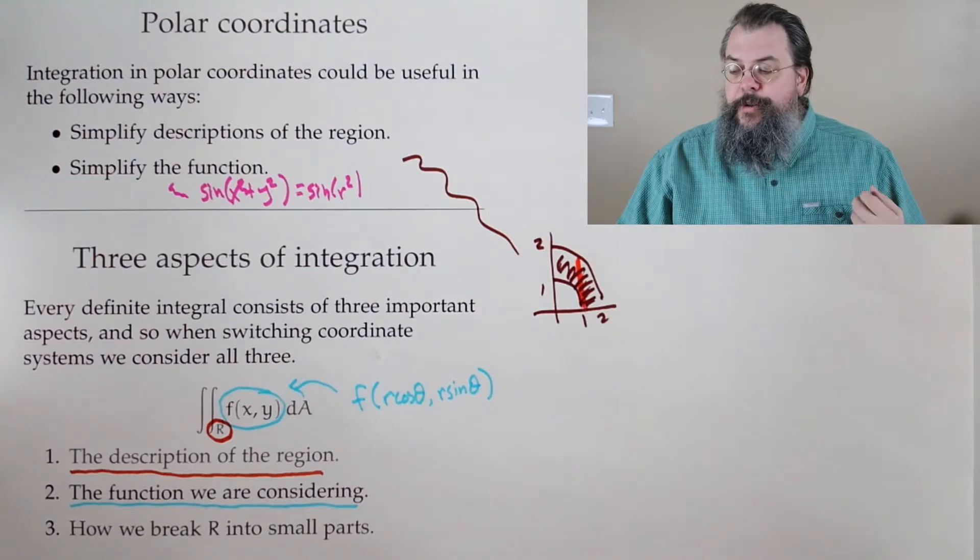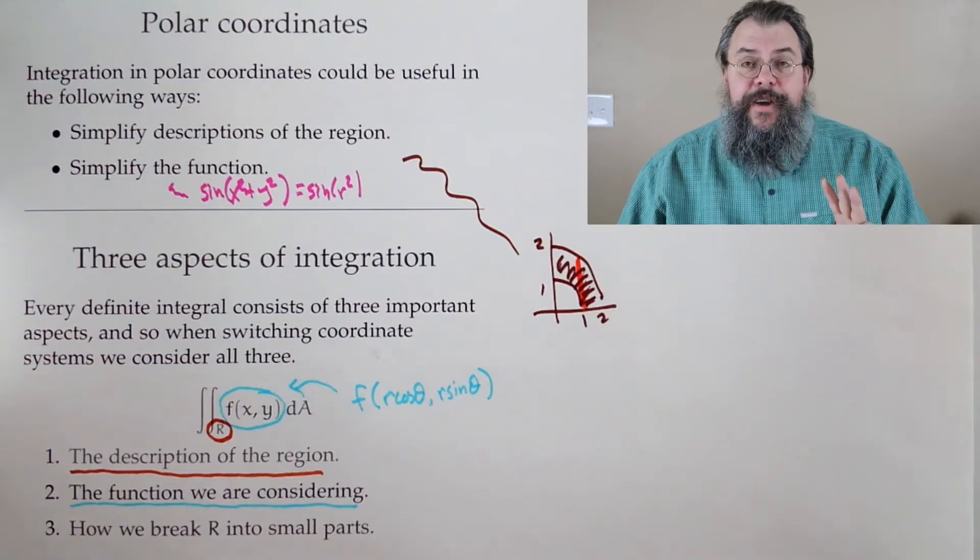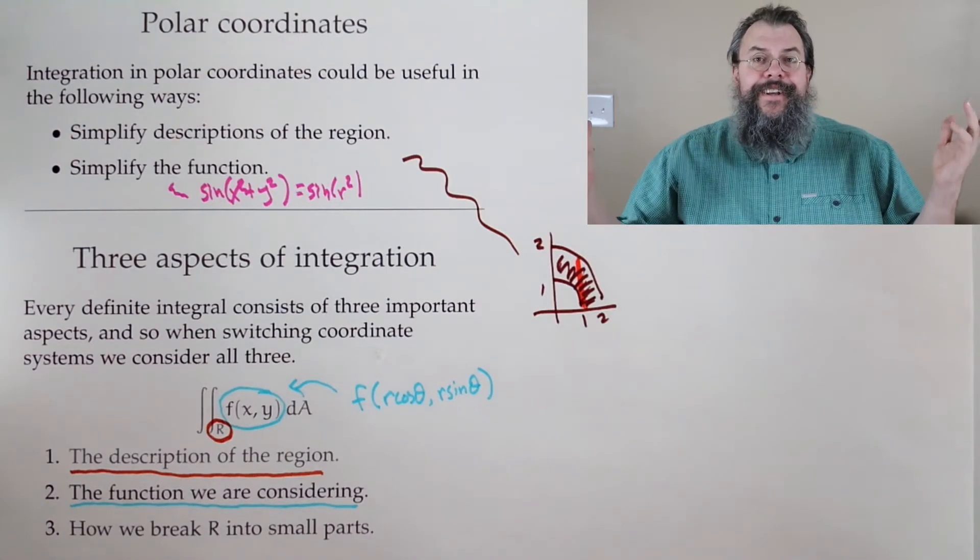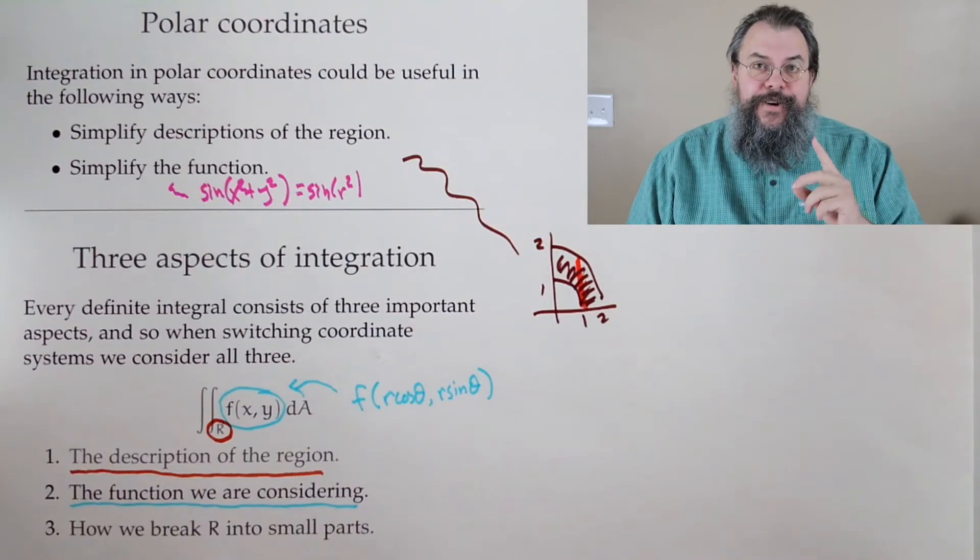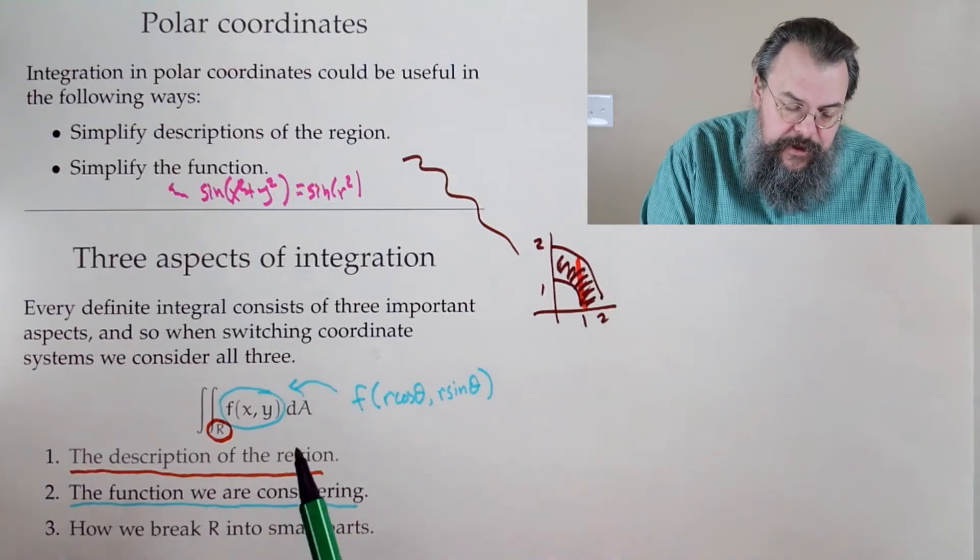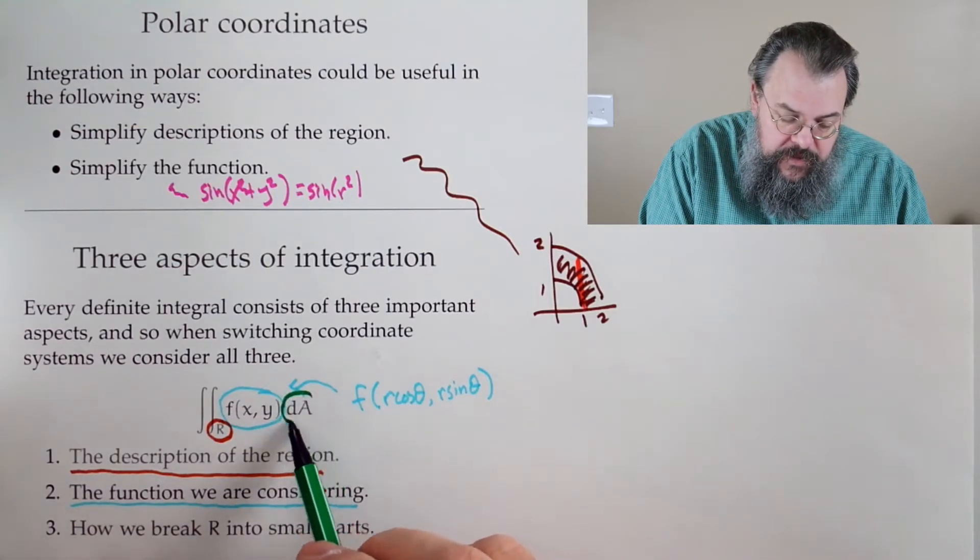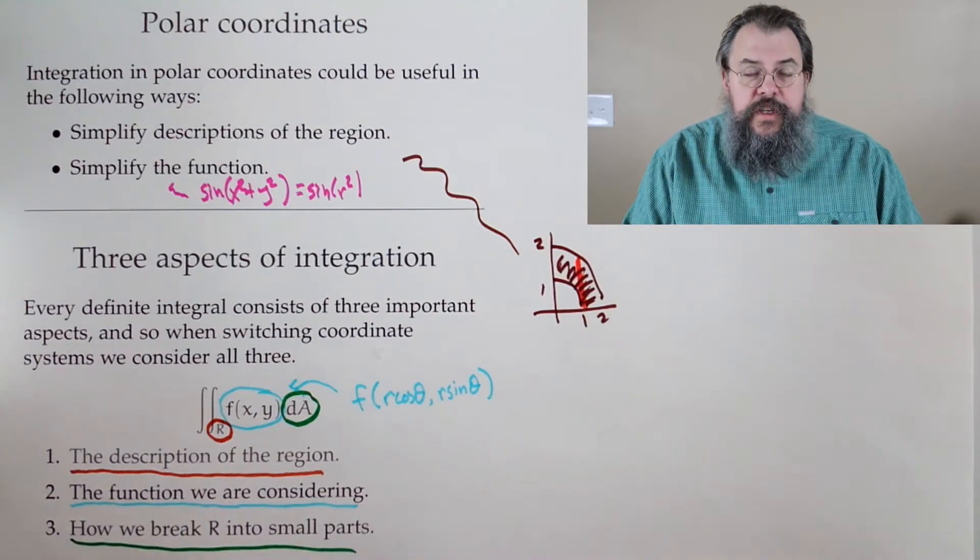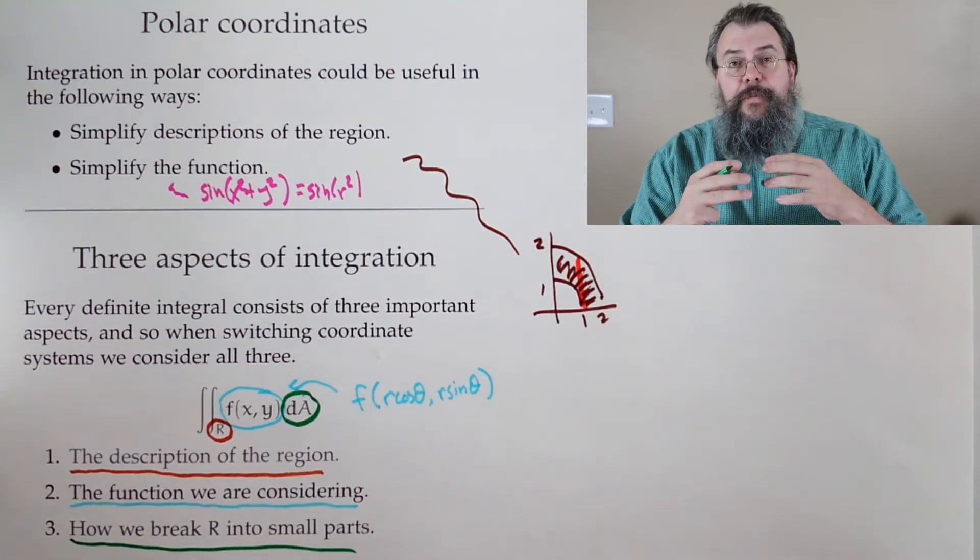Well, what's the third thing, right? We've talked about there's the region and the function. You're like, well, that's it. There's nothing else. No, no, there is something else. And that's the piece on the end. And what that represents is how we're breaking our region up into small parts. That's very important.